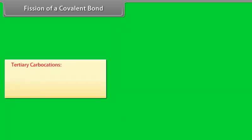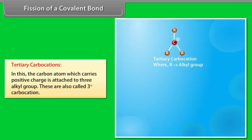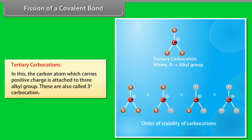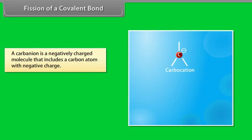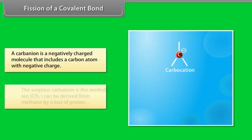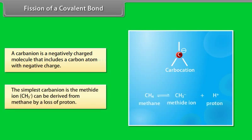In tertiary carbocations, the carbon atom which carries positive charge is attached to three alkyl groups — also called three degree carbocation. A carbanion is a negatively charged molecule that has a carbon atom with negative charge. The simplest carbanion is the methide ion, which can be derived from methane by loss of a proton.